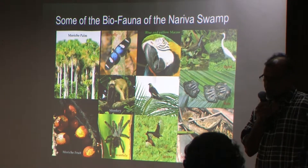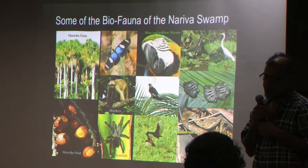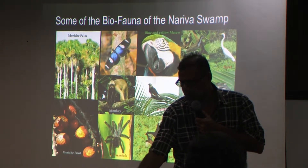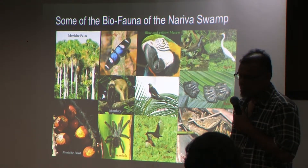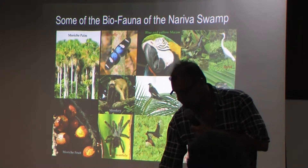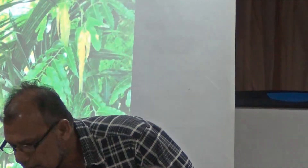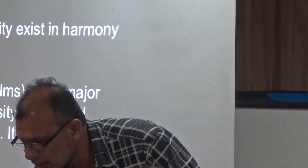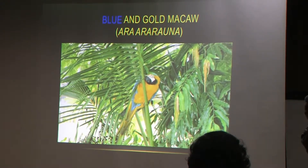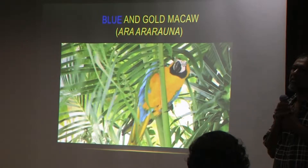These are some of the biofauna that we could find here. They are also associated with the Moorish palm, and a lot of these animals depend on these palms for their habitat and food. This is the Moorish palm — the blue and gold macaw — which is very, very important to us in the Nariva Swamp.